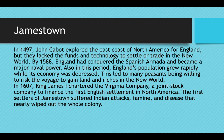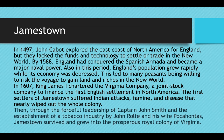The first settlers of Jamestown suffered Indian attacks, famine, and disease that nearly wiped out the entire colony. The Powhatan Indians in particular were very brutal to the English settlers, killing off about three-quarters of the population. But through the forceful leadership of Captain John Smith and the establishment of a tobacco industry by Englishman John Rolfe and his Native American wife Pocahontas, Jamestown was able to survive and grow into the prosperous royal colony of Virginia.